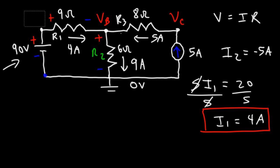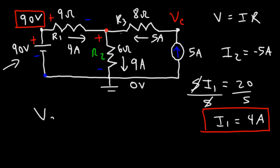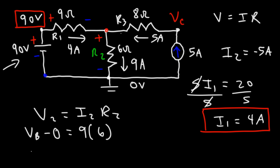Now that we have the currents flowing through each resistor, we can calculate the electric potential at points A, B, and C. At point A, the voltage of the battery is 90, so the positive terminal is 90 volts higher than the negative terminal, and the potential along that line is 0. So the potential at A is 90 volts. For point B: V2 equals I2 times R2. I2 is 9 amps, R2 is 6 ohms, so the potential at B is 54 volts.